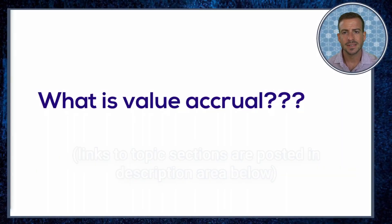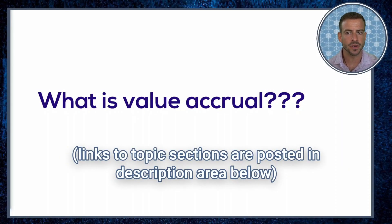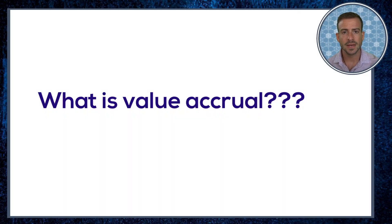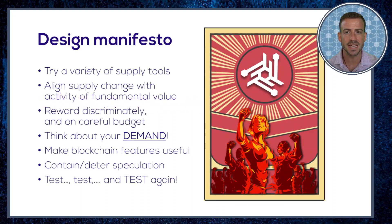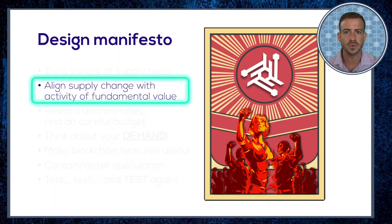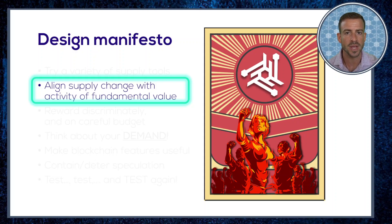Hey everyone, welcome. Today we're continuing our exploration of positive sustainable tokenomics design by looking at the concept of value accrual. Value accrual intersects with a number of points made in this earlier design manifesto that I put forward, but I'd say it mainly relates to the second point where I say we need to align asset supply with a fair estimate of fundamental value that is being created by or rooted through our economy.